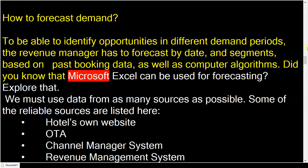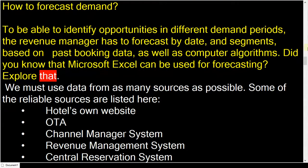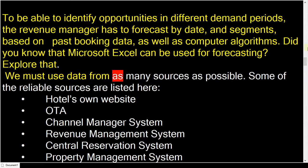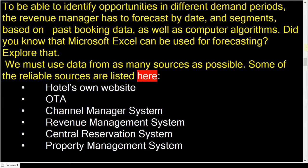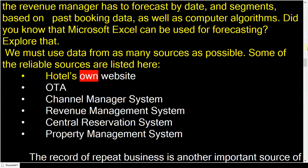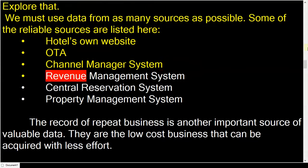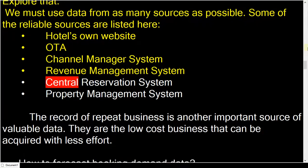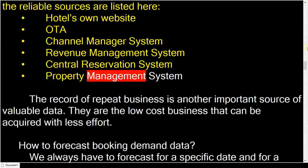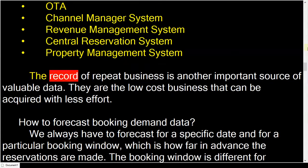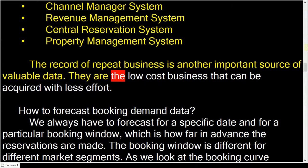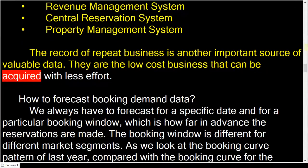Did you know that Microsoft Excel can be used for forecasting? Explore that. We must use data from as many sources as possible. Some reliable sources include: Hotels Own Website, ODA, Channel Manager System, Revenue Management System, Central Reservation System, Property Management System. The Record of Repeat Business is another important source of valuable data — these are low-cost bookings that can be acquired with less effort.